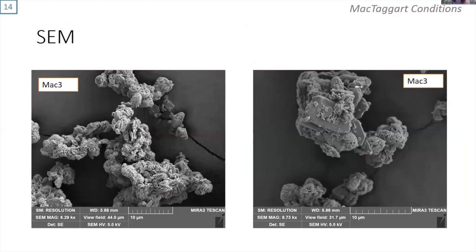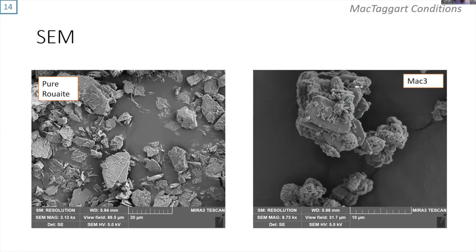Furthermore, the SEM images were quite interesting. You can see two distinctive morphologies: circled in blue, intersecting flat plates forming a nodular structure, and circled in green, much larger flat plates. If I show a picture of pure ruite, you can see that the flat plates are the ruite, so the other morphology must be azurite.